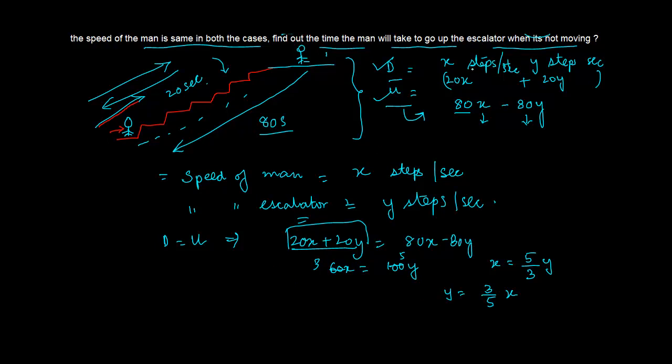Now what do we need to find out? We need to find out the time the man will take to go up the escalator when it is not moving. So the time that the man is going to take is equal to the distance upon speed.